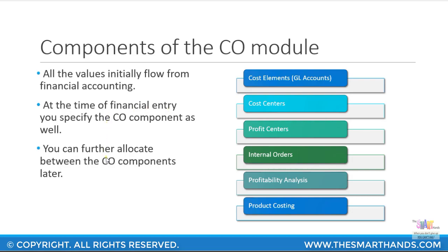At the time of a financial entry, if it is an expense account, you generally specify something called a cost object. A cost object — as the name implies — is like a cost bucket that holds costs, such as a cost center, an internal order, or a WBS element which is part of the PS (Project Systems) module.